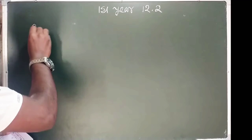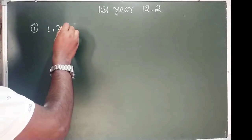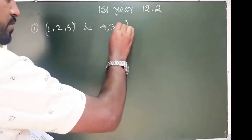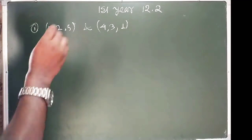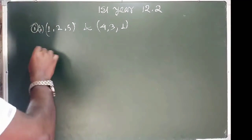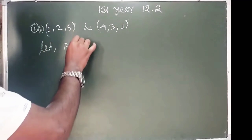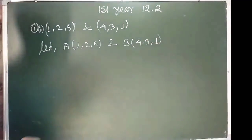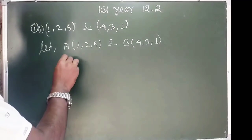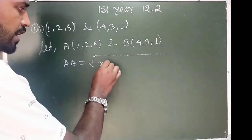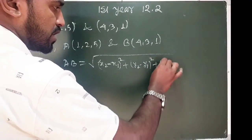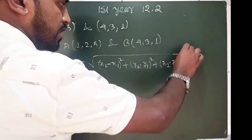Question number 1: I am going to show you the distance. Point A is (1, 2, 5) and point B is (4, 3, 1). The distance A to B is equal to the square root of (x2 minus x1) whole square plus (y2 minus y1) whole square plus (z2 minus z1) whole square. So for point A, x1, y1, z1.